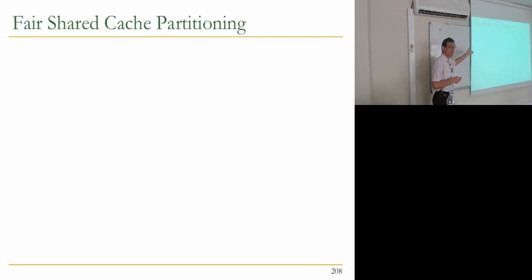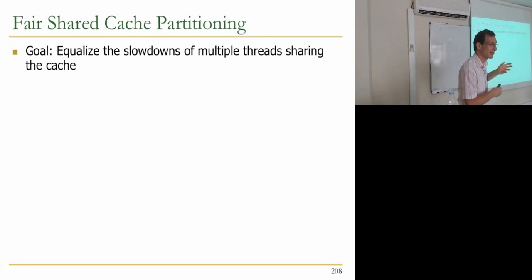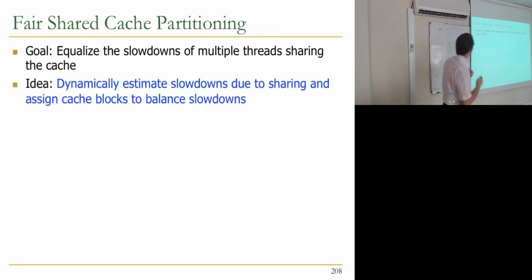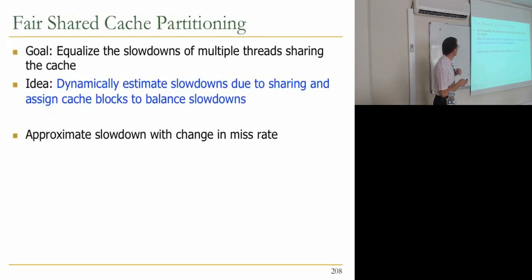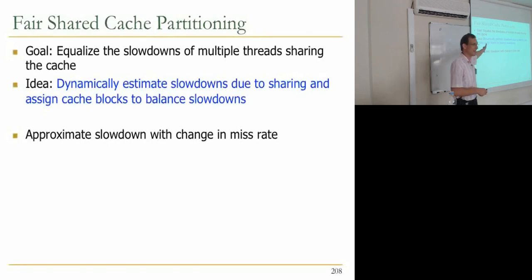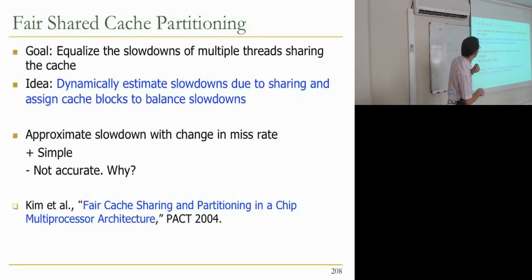Let's look at a mechanism that tries to be fair. The previous mechanism tries to improve performance but isn't necessarily fair. Fairness is a hard concept — one definition is to equalize the slowdowns of multiple threads sharing the cache. TomHawk dynamically estimates slowdowns due to sharing compared to when the application has all the cache to itself, and assigns cache blocks to balance those slowdowns. We'll approximate slowdown with change in miss rate, though we know this is not entirely accurate since different misses have different costs.